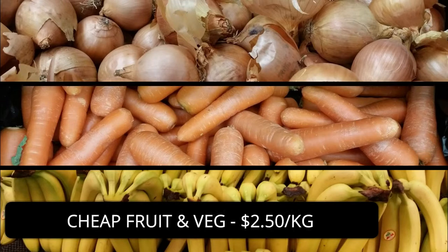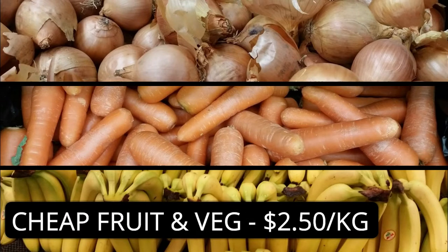Now for supermarkets. Cheaper fruits and vegetables such as onions, carrots and bananas are about $2.50 per kilogram.